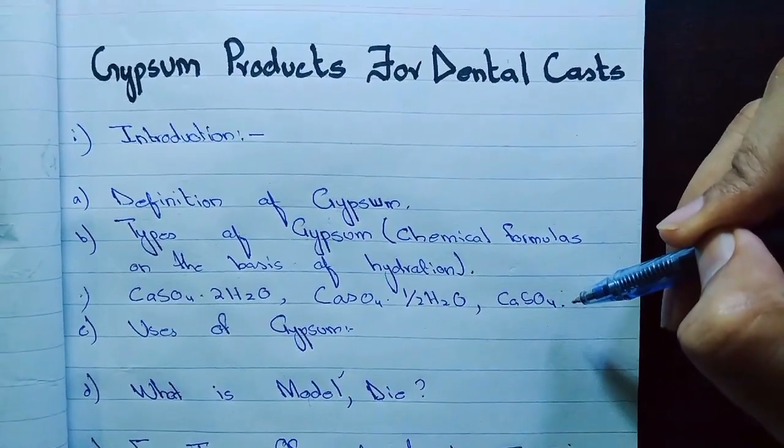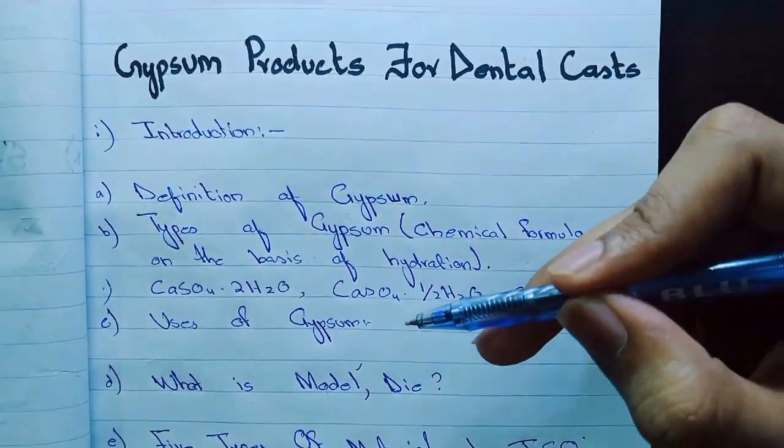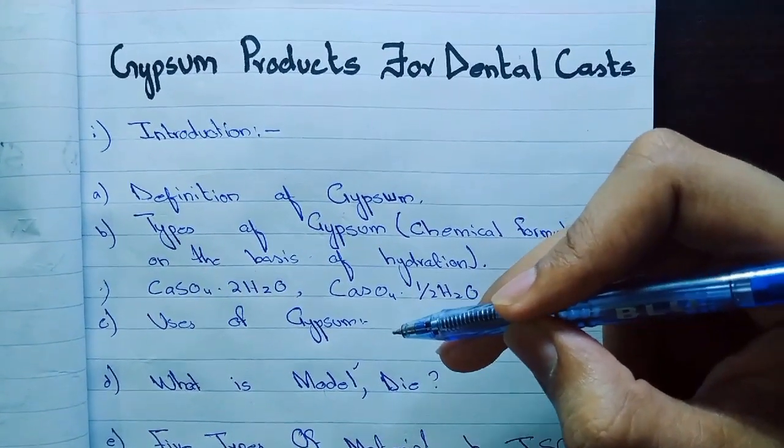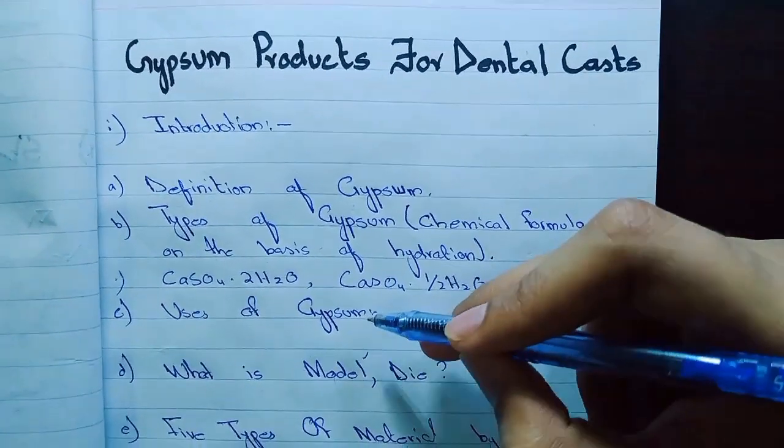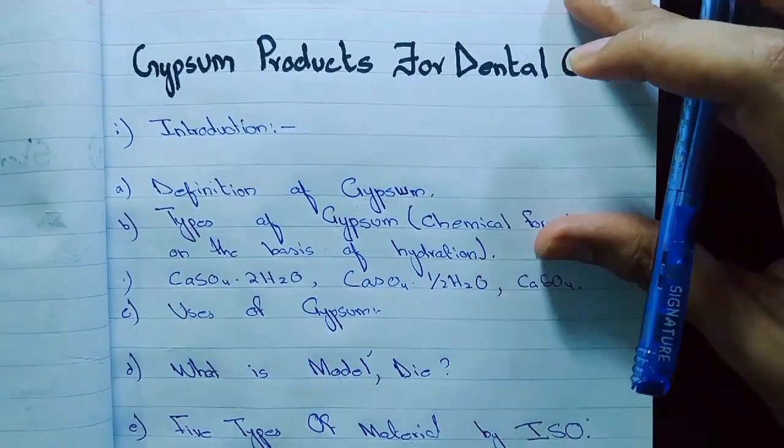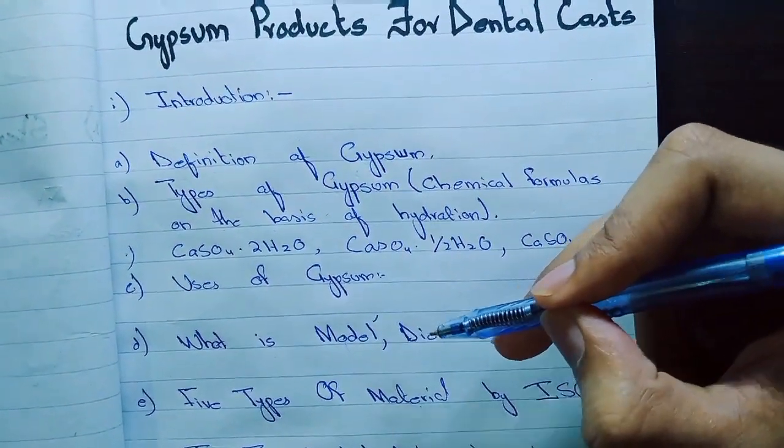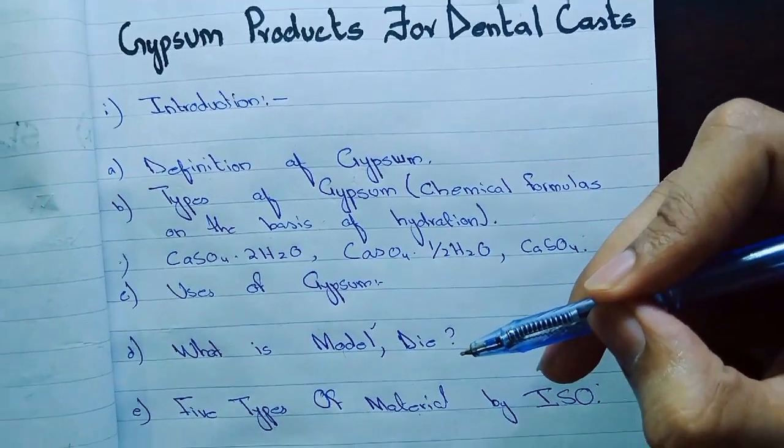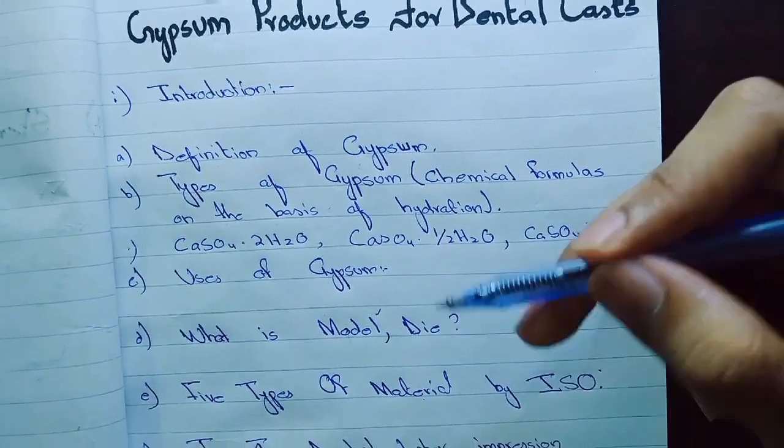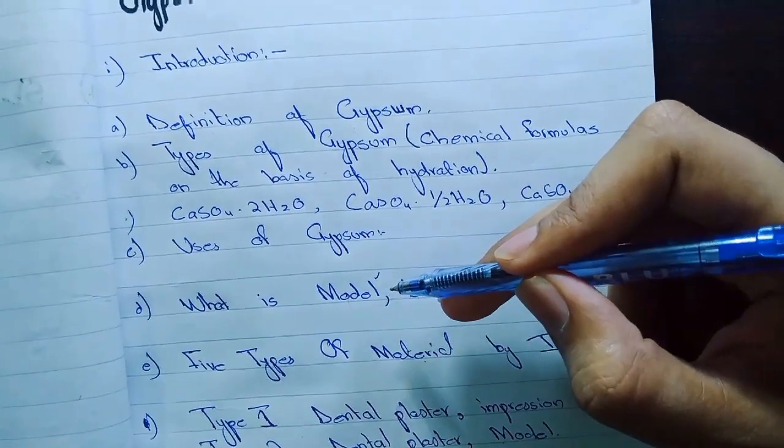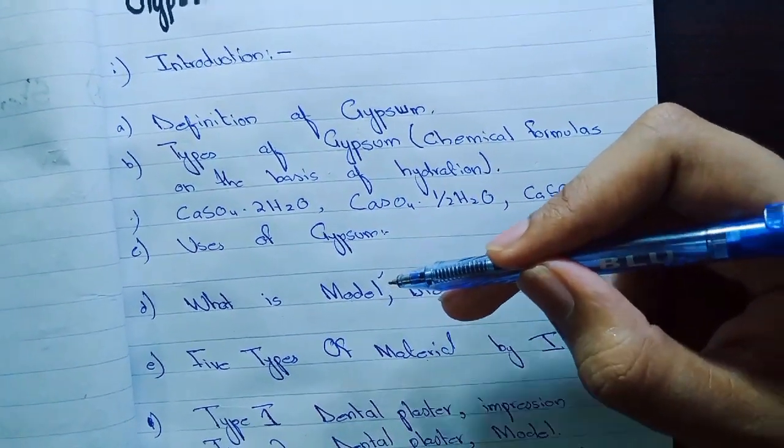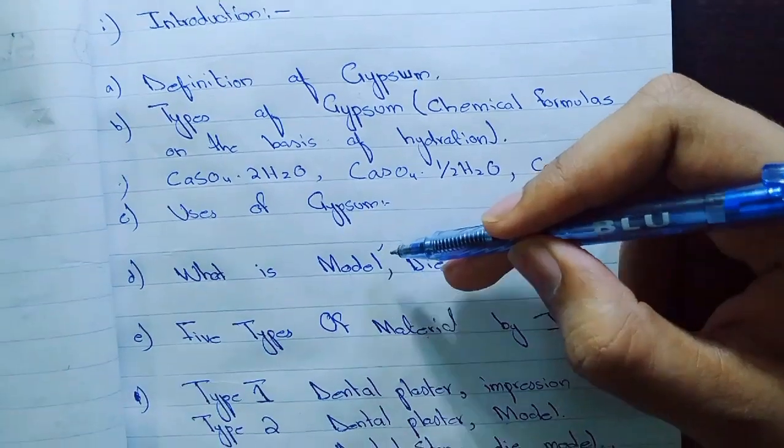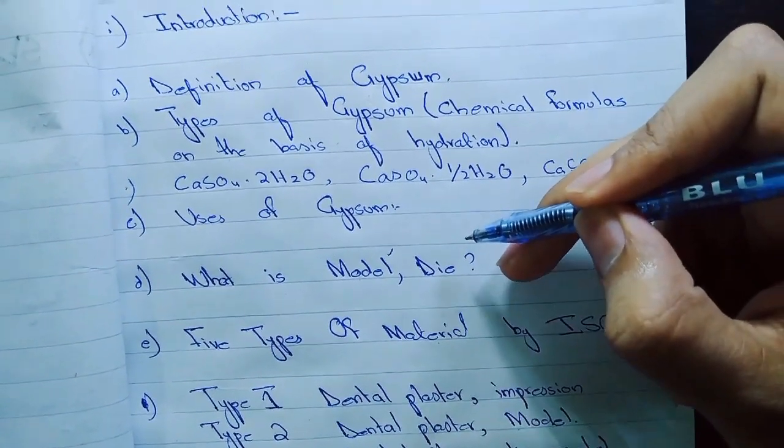Now the uses of gypsum. Where can gypsum be used in dentistry? From gypsum you can make casts, you can make study models, you can make dyes, and it can be used as investment material too. Now moving on, what is model and what is dye? It is very essential to know the terminologies in dental material sciences. Model is simply the replica of several teeth or it can be a replica of edentulous arch replicating soft tissue structures. And dye simply is the replica of single tooth.